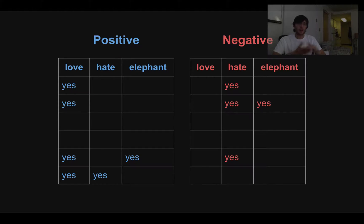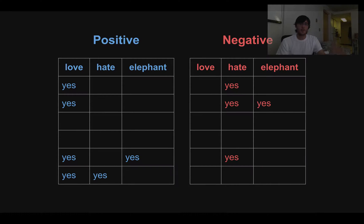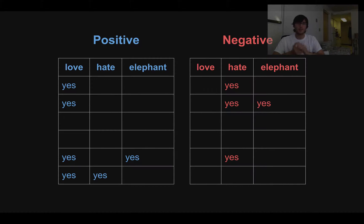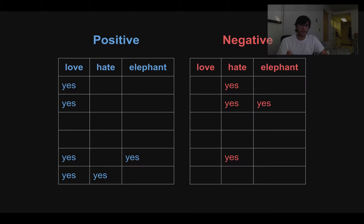This is where we bring in some math. We're going to be computing things called conditional probabilities. That means: if I tell you I've given you a sentence that has positive sentiment, I want to know the probability of seeing the word 'love.' Or if I give you a negative sentence, what's the probability that the word 'elephant' will be inside it? A conditional probability is just a probability conditioned on something — in this case, whether the sentence is positive or negative. We're pretty much set up to compute these probabilities because I've already split the data into positive and negative tables.